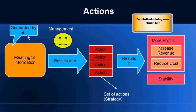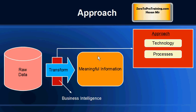Who looks at this meaningful information generated by BI? It is the management of the company. They take actions based on this information — a set of actions, also called a strategy — that results in a better future. So we understand the role business intelligence is playing: to help a company analyze their past and make actions that will result in a better future. But is business intelligence just a software or is it a process?